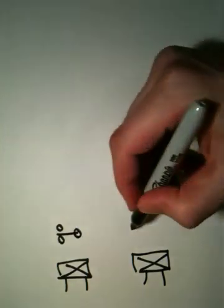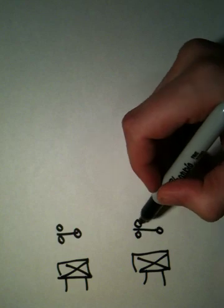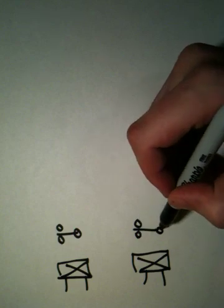Now I draw the contacts like this. This is the normally open contact, this is the normally closed contact and this is the wiper.